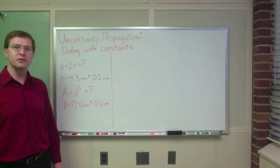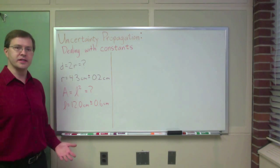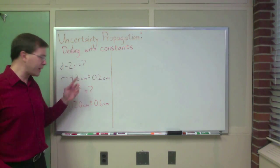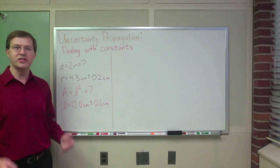Continuing our discussion about uncertainties and propagating uncertainty through equations, I want to say a word or two about how you deal with constants. Things like multiplying by a constant or raising a number to a constant power, constants that don't have any uncertainty associated with them.